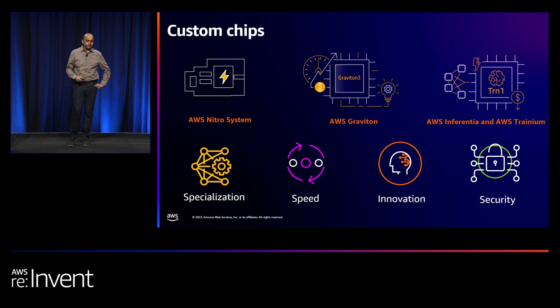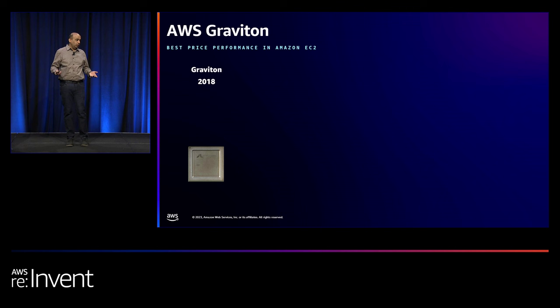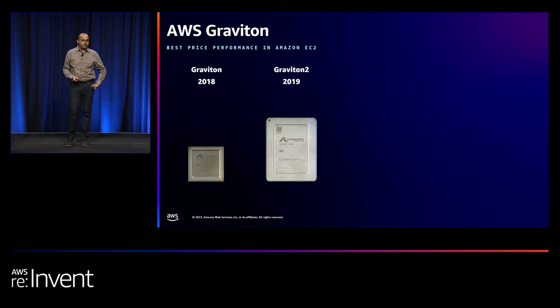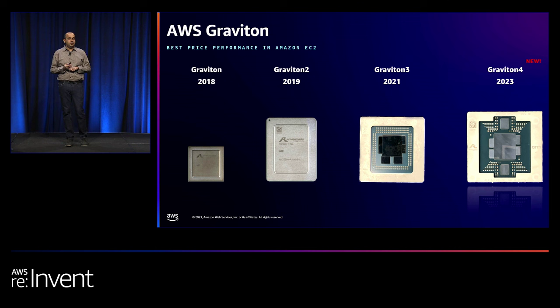Our Graviton journey started in 2018 with the first Graviton chip powering the EC2 A1 instance, where our goal was to prove you could run cloud workloads on ARM-based servers. We followed that with Graviton 2 in 2019, delivering a leap in performance with 4x the number of cores and 2x performance per core versus the first-gen. We continued that with Graviton 3, announced in 2021, delivering up to 25% improvement versus Graviton 2. And now, Graviton 4 was just announced in Adam Selipsky's keynote on Tuesday, characterized as the most powerful and energy-efficient chip we've built thus far.